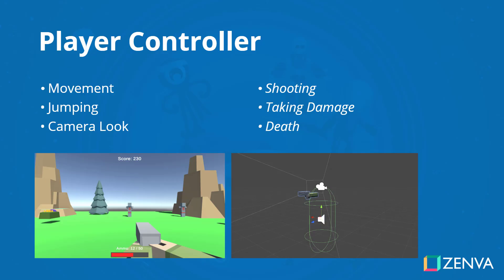One of the first things we will look at creating is the player controller. This is going to be a very versatile player controller which will be able to move, jump, and look around with the camera. The player will also be able to shoot a gun, take damage, and die at the end if they take too much damage.